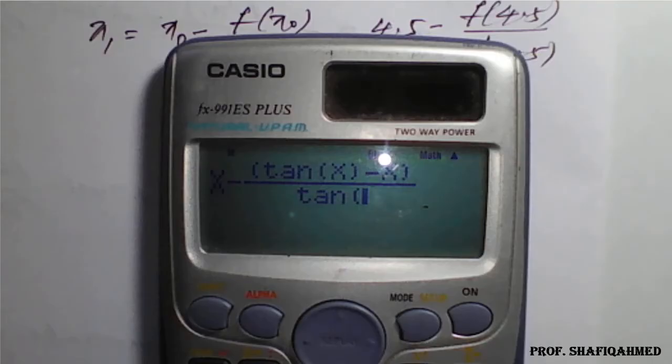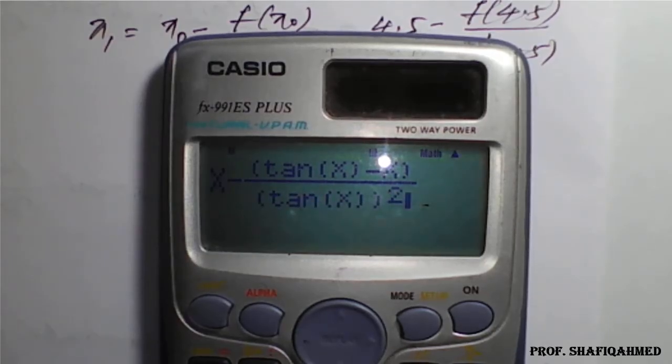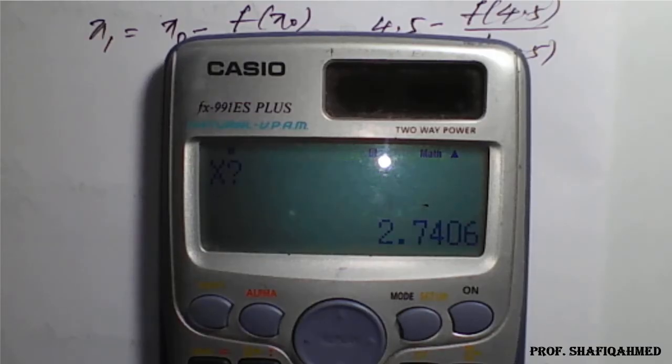Divided by f dash of x, which is tan square of x. Tan square x can be written as tan x whole square in the calculator. So tan of 4.5, close the brackets, then square. Now go for calc option.